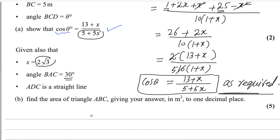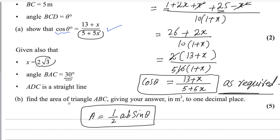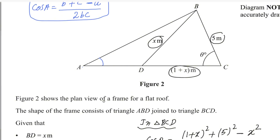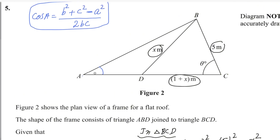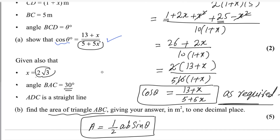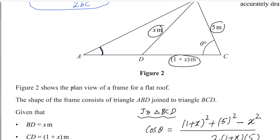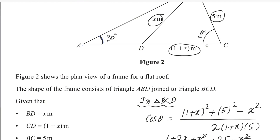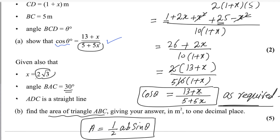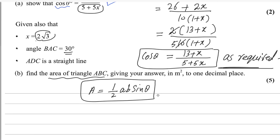First, let me tell you the formula for finding the area of any triangle. The formula is ½ times A times B times sin θ, where A and B are the adjacent sides — the sides that contain the angle θ. Using this formula we can find the area, but we need to find the area of the big triangle ABC. Angle BAC is given as 30 degrees in this part. Angle theta can be found by substituting the value of x into our earlier equation.